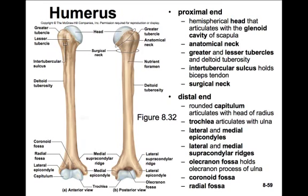There are greater and lesser tubercles — the greater tubercle is a larger bump and the lesser tubercle is a smaller bump. In between those tubercles is the inter-tubercular sulcus, or ditch. At the distal end of the humerus we'll see a rounded capitulum, which articulates with the head of the radius, and the other bump is called the trochlea. Later we'll see that these are simply called condyles.